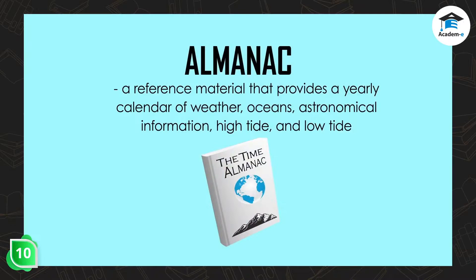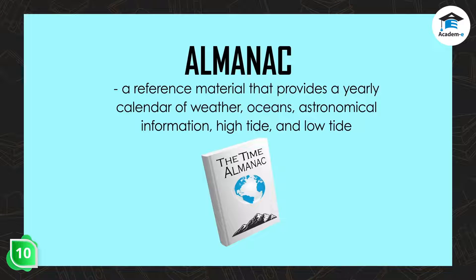The next reference material is the almanac. This reference material provides a yearly calendar of weather, oceans, astronomical information, high tide, and low tide. It consists mainly of statistics and charts. Note that the information in an almanac is arranged according to subject matter instead of alphabetically.